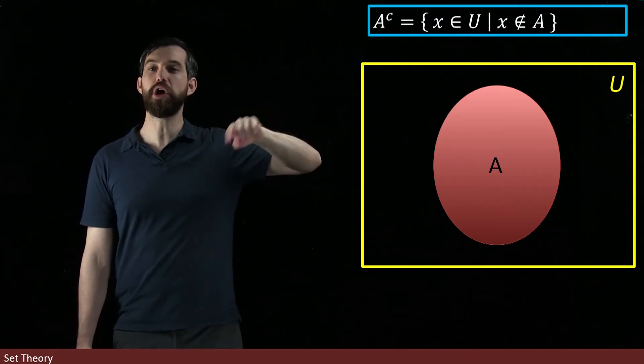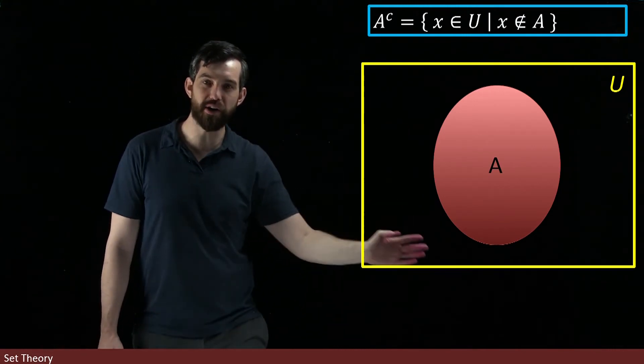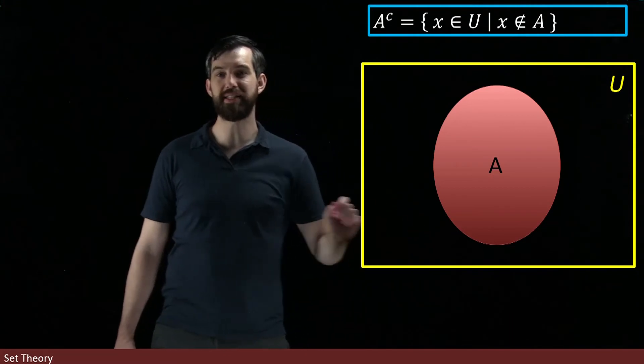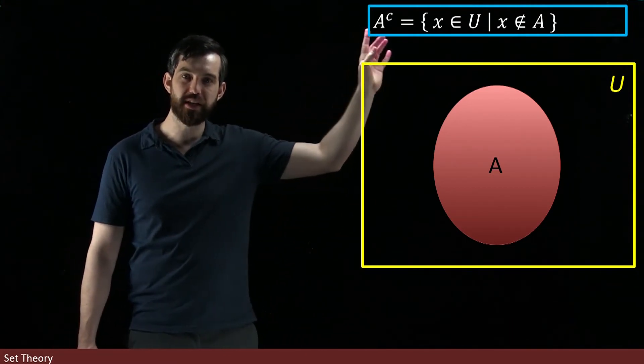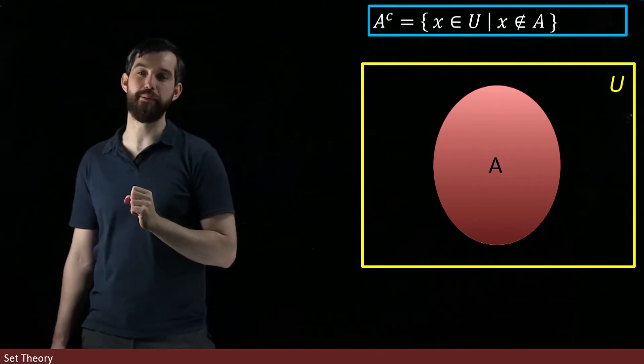I am claiming that a complement is not A, it's all this stuff over here. All of the stuff which is around my set A. It's all of the things that are not in A, but are still broadly in my universe.